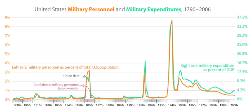Truman originally wanted a rollback strategy to unify Korea; after the Chinese successes he settled for a containment policy to split the country. MacArthur argued for rollback but was fired by President Harry Truman after disputes over the conduct of the war. Peace negotiations dragged on for two years until President Dwight D. Eisenhower threatened China with nuclear weapons, and an armistice was quickly reached with the two Koreas remaining divided at the 38th parallel. North and South Korea are still today in a state of war, having never signed a peace treaty, and American forces remain stationed in South Korea as part of American foreign policy.